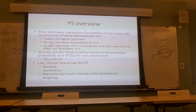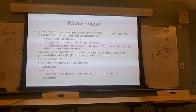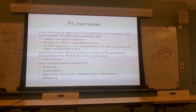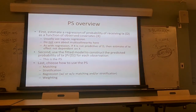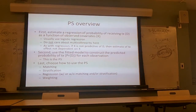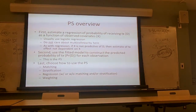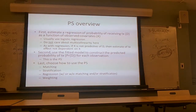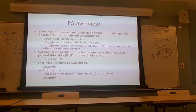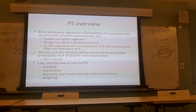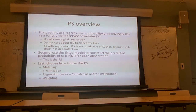Let me go through the process of doing a propensity score analysis. In the beginning we estimate a regression of the probability of receiving treatment — using D to denote that — as a function of the observed covariates. Because our goal is prediction in the second step, we usually use logistic regression. Statisticians and biostatisticians use this technique, so we use logistic regression. One important thing: we don't care about multicollinearity here — our goal is not to measure the causal impact of some variable on whether you get treatment.